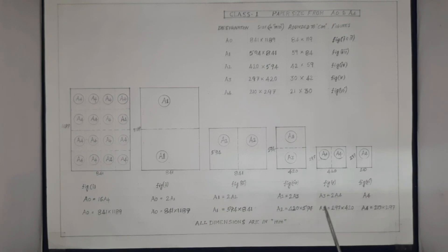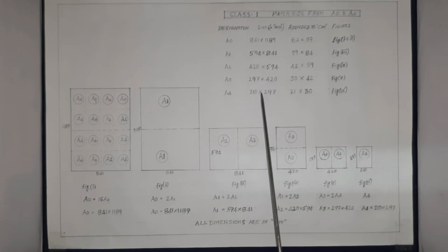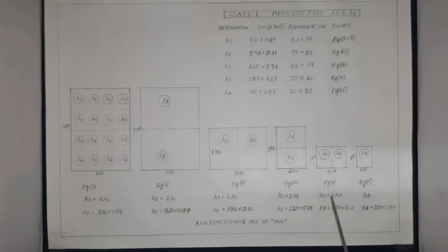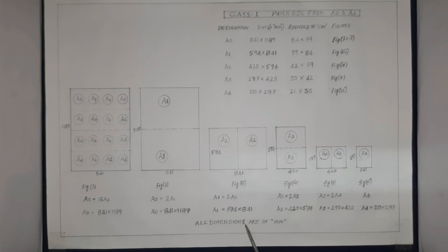In Figure 5, the A3 paper size is given as 297 mm × 420 mm. You can also refer to the table whenever required. When the A3 paper is folded at the center through the dotted line, it gives two A4 papers. Coming to Figure 6, the A4 paper is shown as a single sheet with a size of 210 mm × 297 mm.